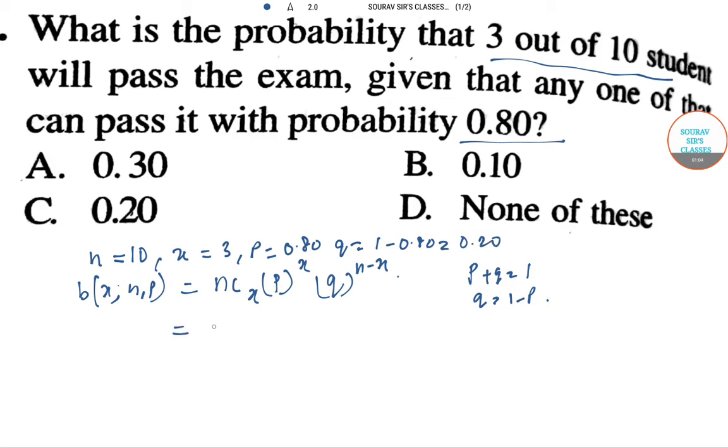So we will put the values: 10c3, 0.80 to the power 3 because x is 3. Then q is 0.20, n minus x, that means 10 minus 3 which equals 7. So if we calculate this portion we will get the answer to be 0.20.